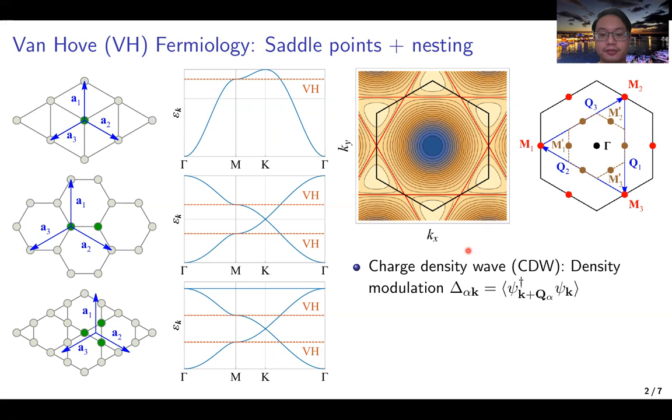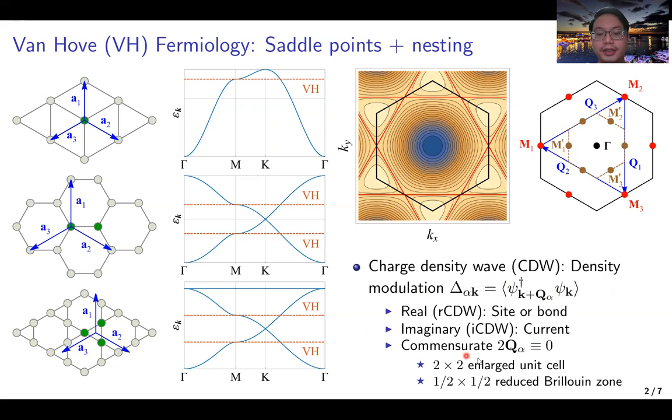Here we focus on the charge density waves, where density modulations occur from the finite particle-hole condensate at nesting momenta. If the order is real, we will have bond density modulations. If it is imaginary, we will have current density modulations, which are the staggered currents in real space.